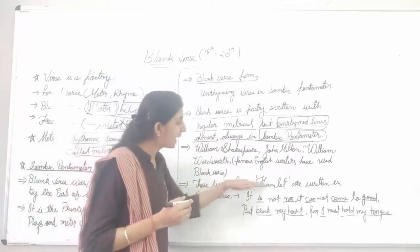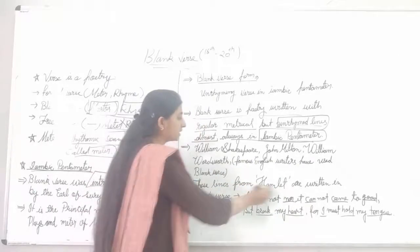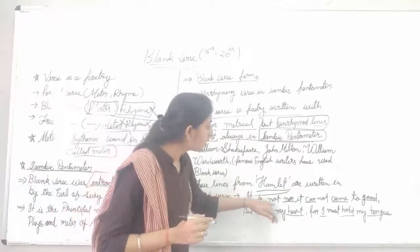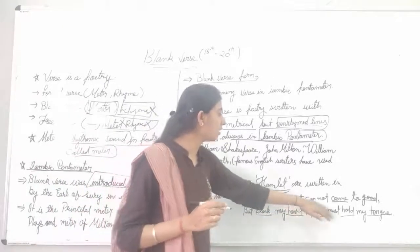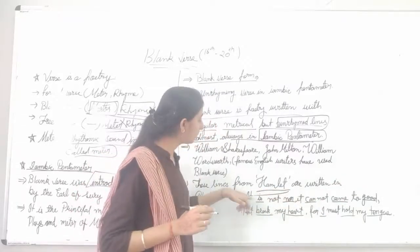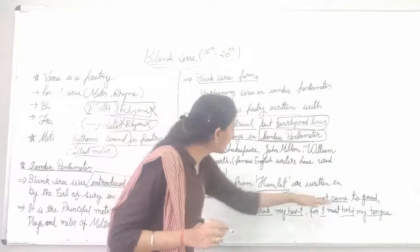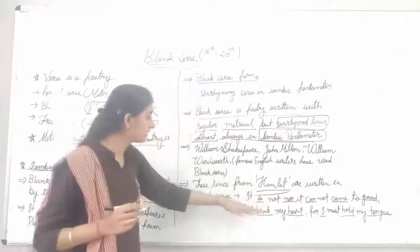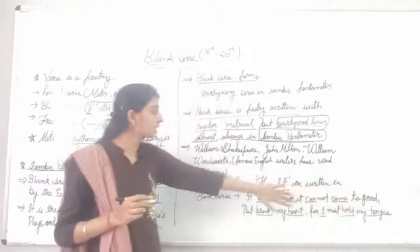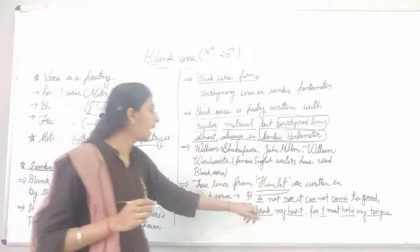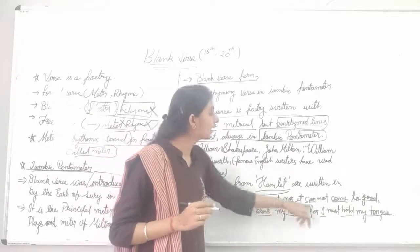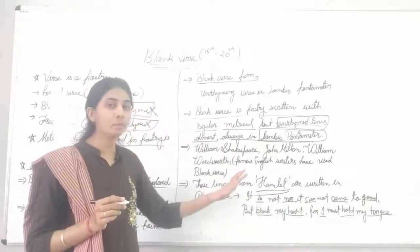These lines from Hamlet are an example of blank verse. For example, frailty thy name is woman, or it cannot come to good. You have unstressed and stressed syllables. Five stressed and five unstressed syllables. The pattern is unstressed then stressed.